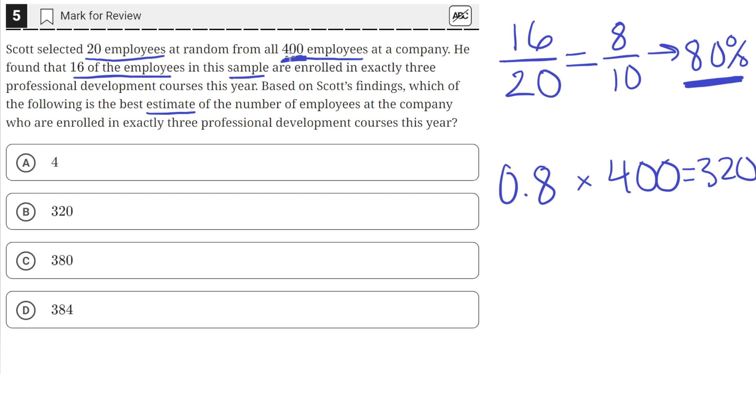So 320 people out of the 400, which is 80 percent, are enrolled in the three professional development courses. The correct answer is B.